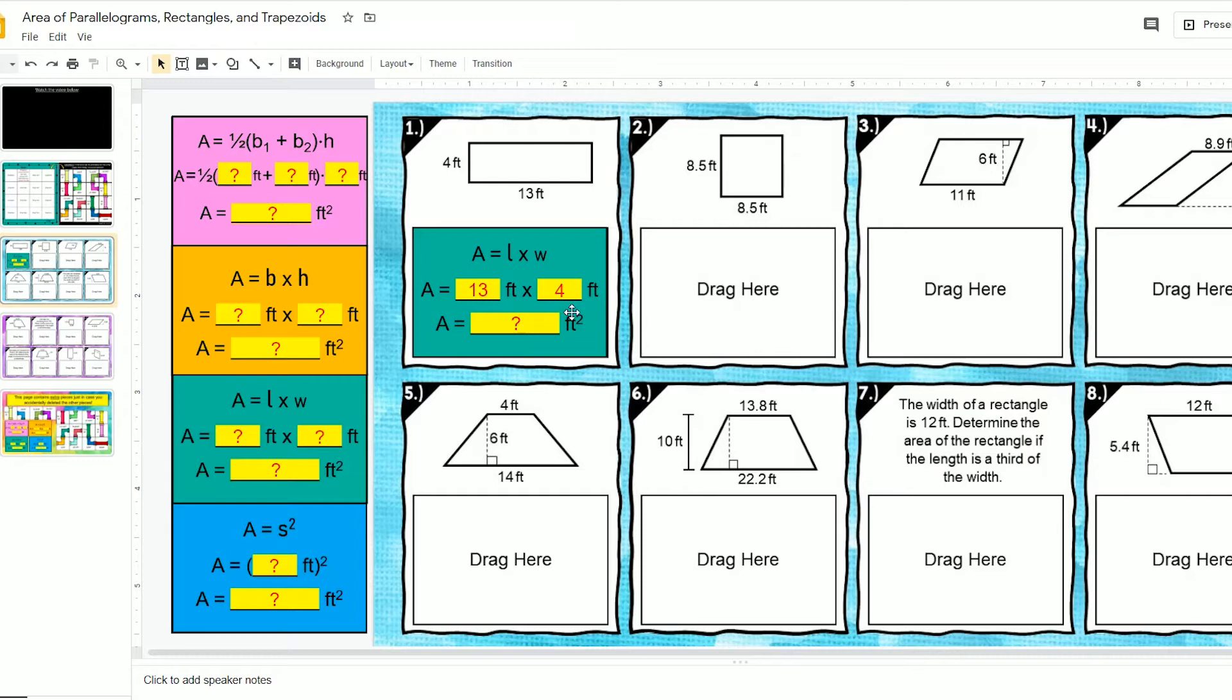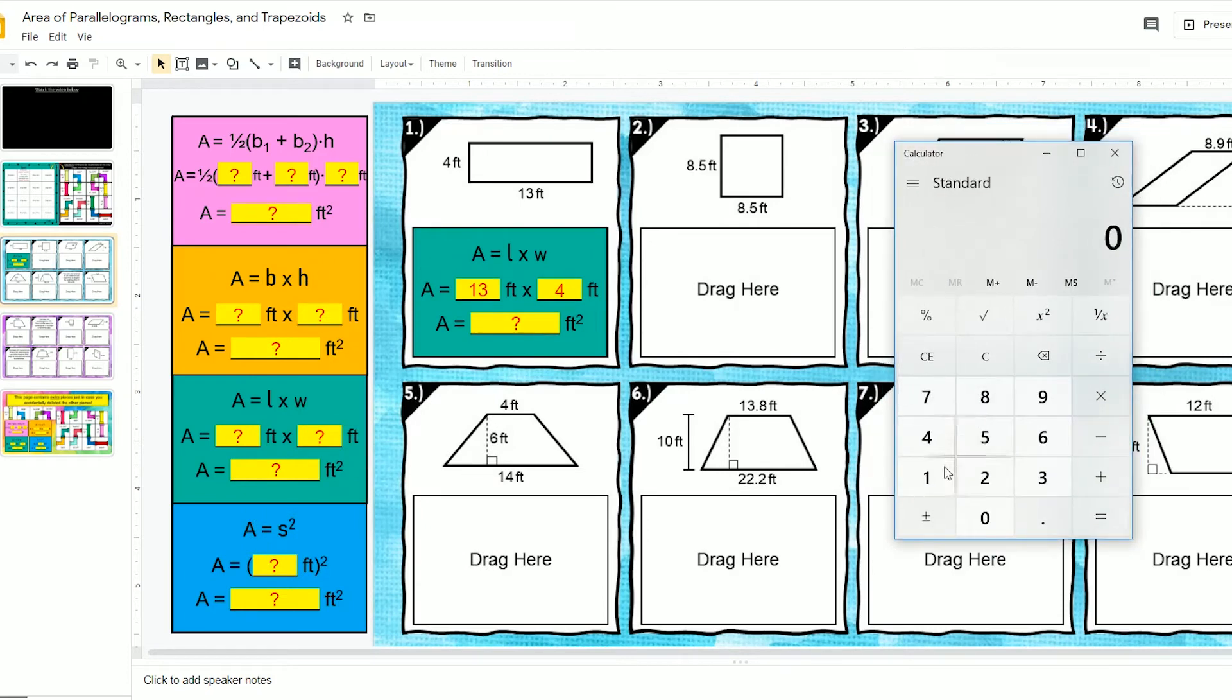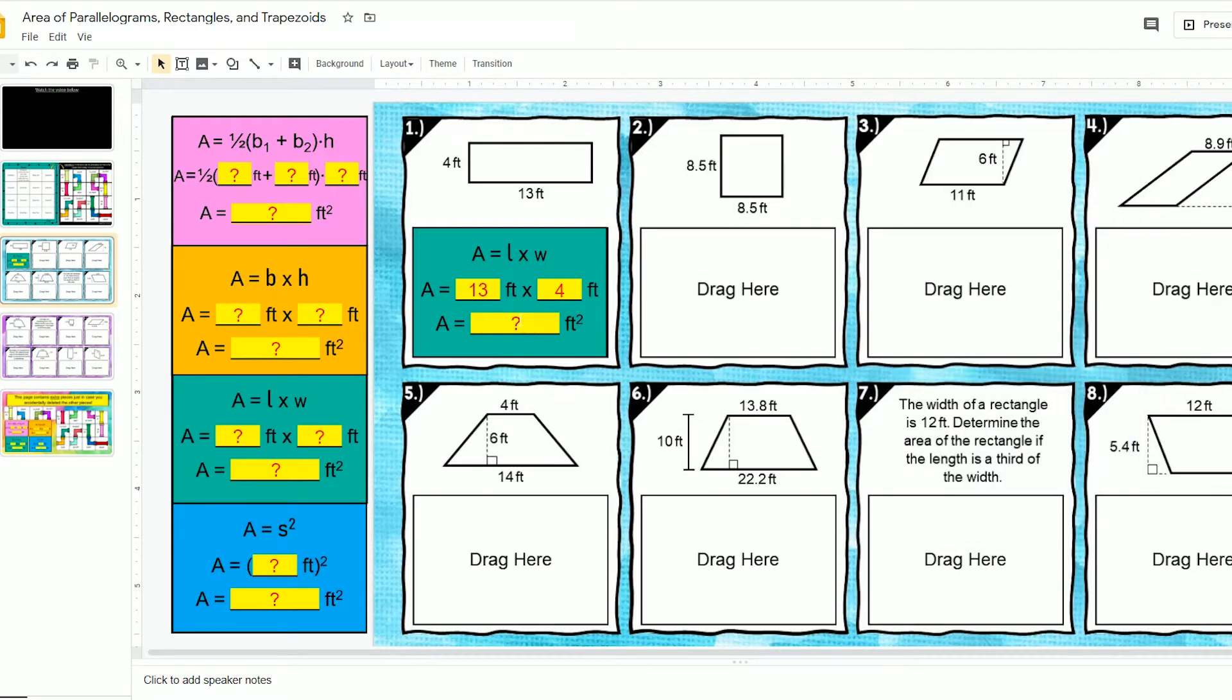Now 13 times 4. If you need to, you can get a calculator. 13 times 4 gives me 52. So where it says area equals, I'm going to type 52, and it says square feet or feet to the second power or feet squared.